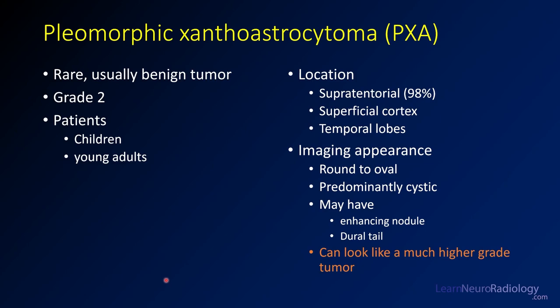These are rare but usually relatively indolent tumors. They tend to be grade 2 lesions and usually occur in children and young adults — think teenagers and patients in their 20s. Their location is often supratentorial, usually superficial cortex, and often in the temporal or frontal lobes. Their imaging appearance can be round or oval, with cystic components or be predominantly cystic. They may have an enhancing nodule and can also have dural tails, which is a trademark of PXA among intraparenchymal tumors.